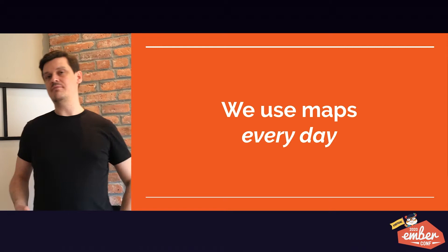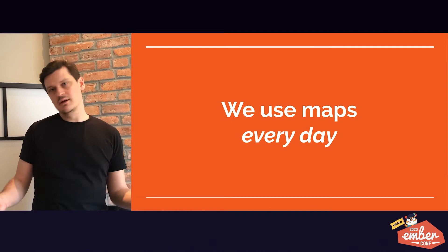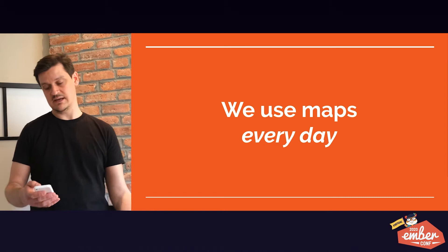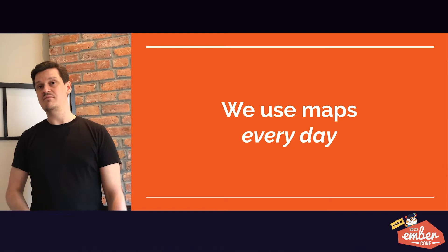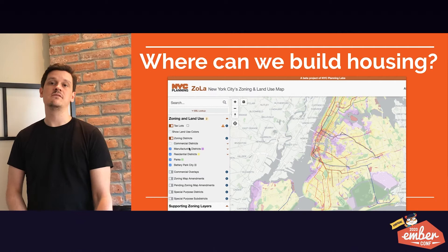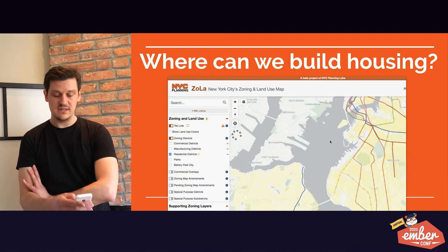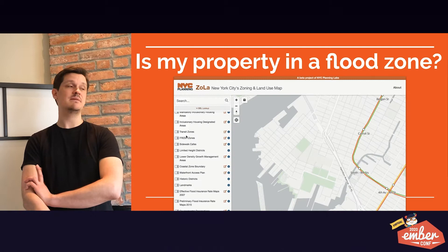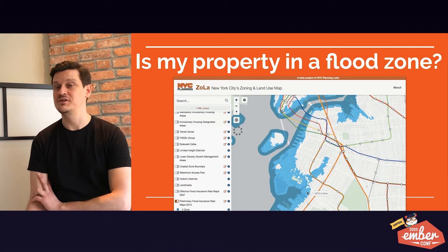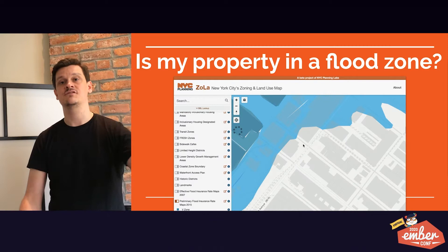Our flagship application is Zola. 1,000 New Yorkers use it every day. That's not Facebook, but it's quite a lot for a small team. City planners use it, advocates, lawyers — a lot of different use cases. Some people might ask: where can we build housing? You can use Zola to look at where all of the residential zoning is and where you can build in a particular neighborhood. Is my property in a flood zone? We can show you if a property is in a flood zone 30 or 60 years from now — that data is publicly available.